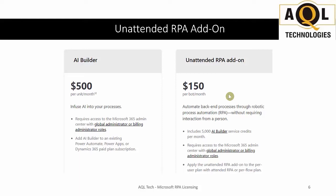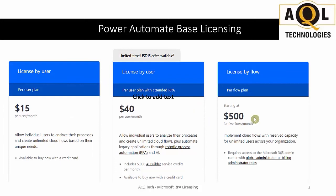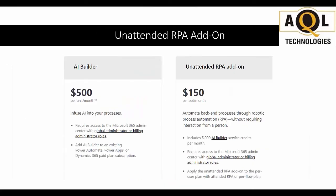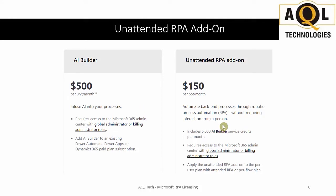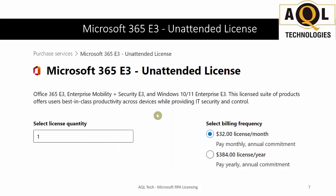The Power Automate per-user with attended RPA plan ($40) and the per-flow plan ($500) are both eligible base plans for the unattended RPA add-on. The unattended RPA add-on is licensed by the bot. If you are running concurrent instances of a single process on the same machine, that requires an additional unattended bot for each instance. Multiple unattended RPA add-ons can be applied against a qualifying base plan.